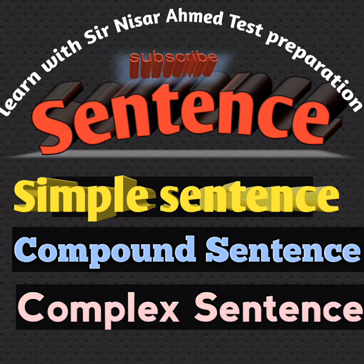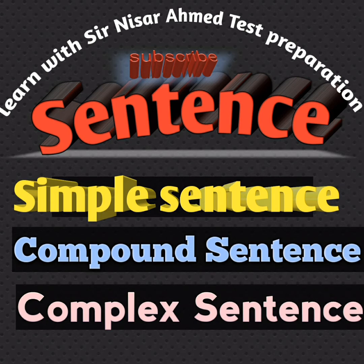Looking at some papers in the FBR — including the evaluation officer's paper, intelligence officer, and inspector's paper — there were 20 questions in the English portion, and questions about simple sentences, compound sentences, and complex sentences featured prominently.